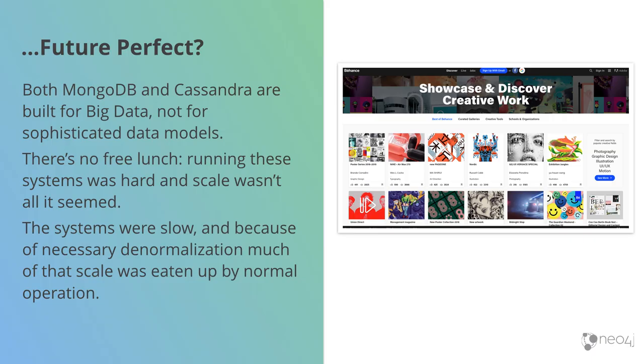What's kind of disappointing is that a lot of the scale from those platforms, which are tremendously scalable, is used simply to keep the model ticking along. MongoDB and Cassandra are superb databases for scale, but they're not brilliant for sophisticated data models. There's no free lunch here — having to denormalize means a lot of the scale provided by those databases is simply eaten up in making the model work.